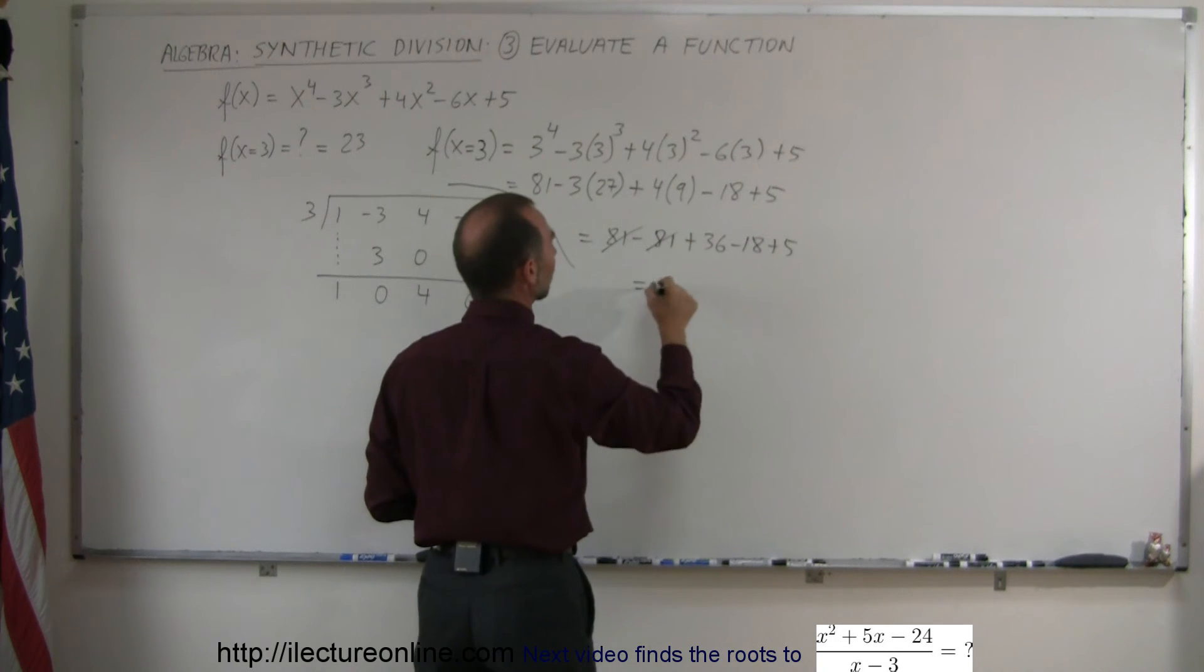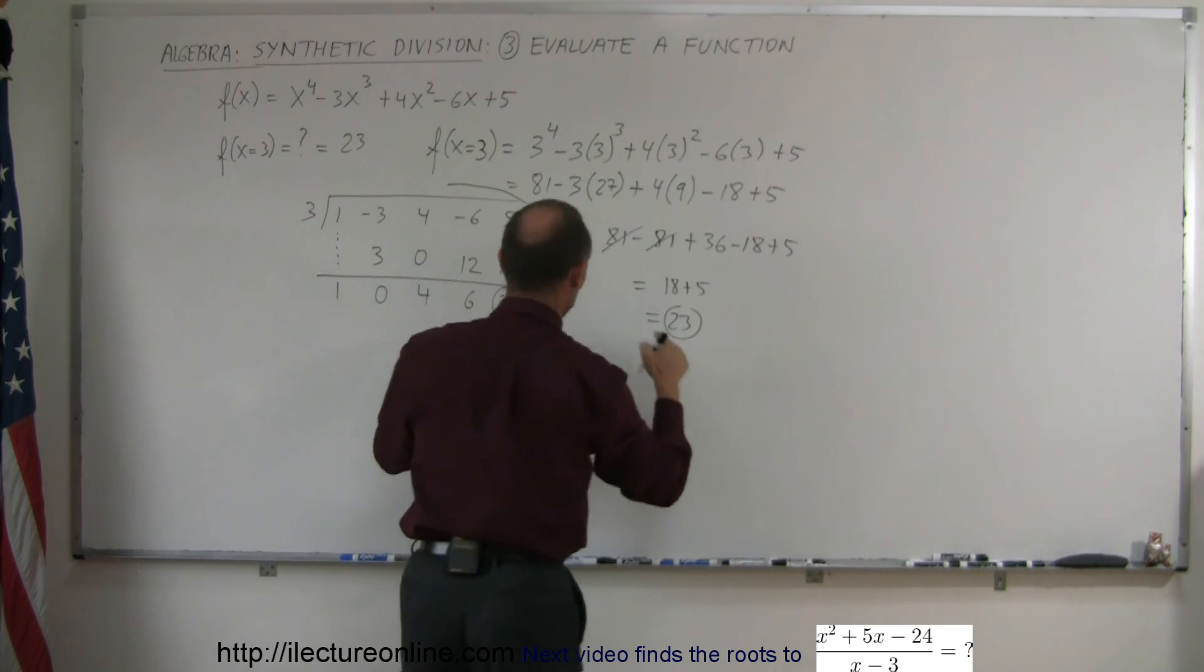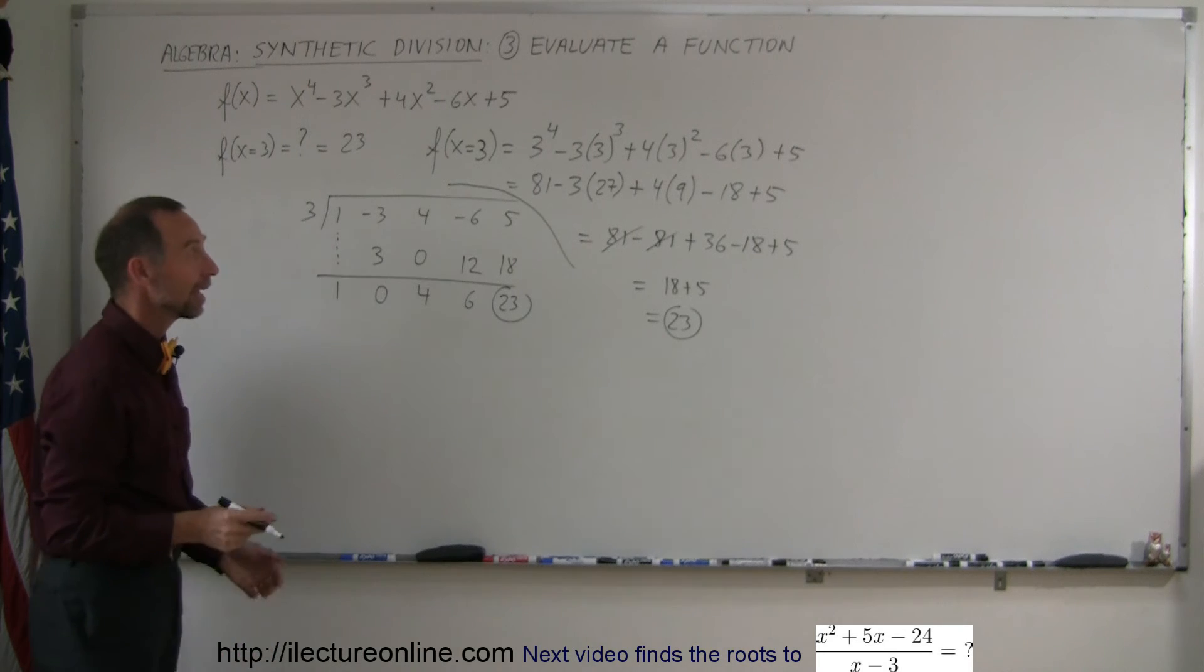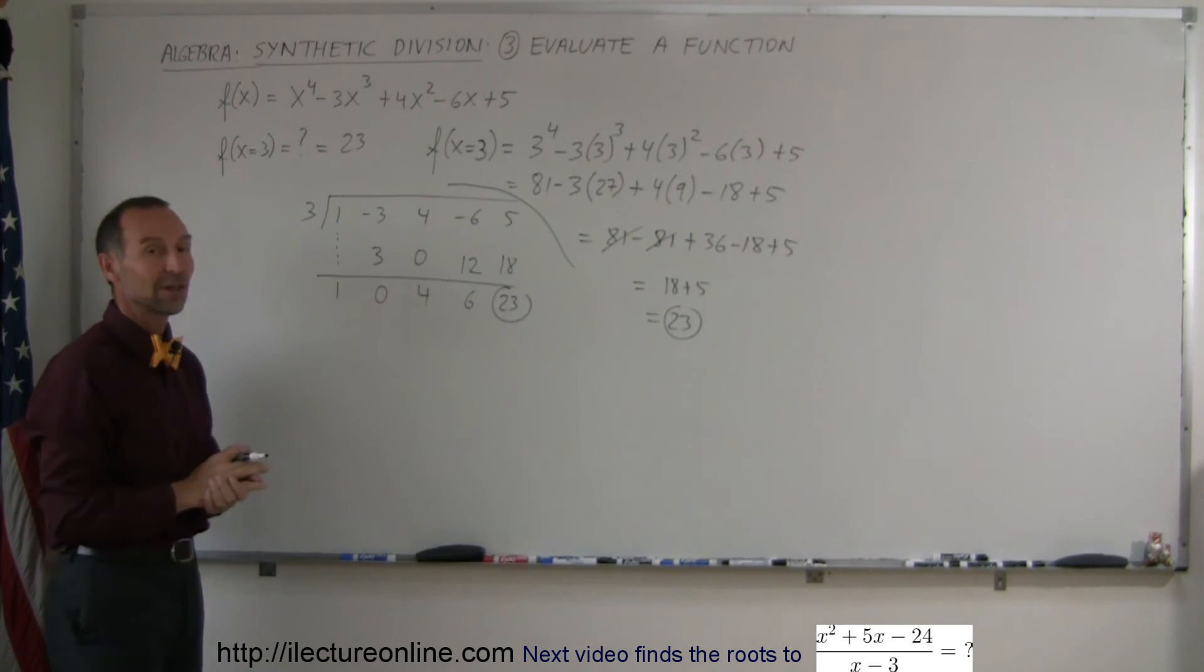So these cancel each other out. This equals 36 minus 18, which is 18, plus 5, which equals 23. Notice we get the exact same answer. But again, things that get quite complicated like that can be very easily done with synthetic division.